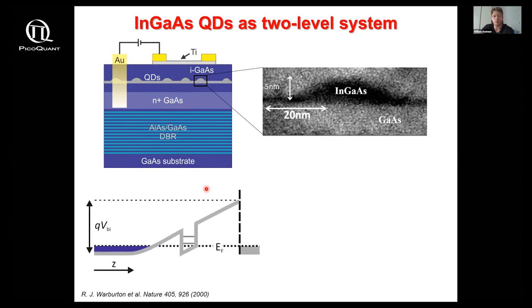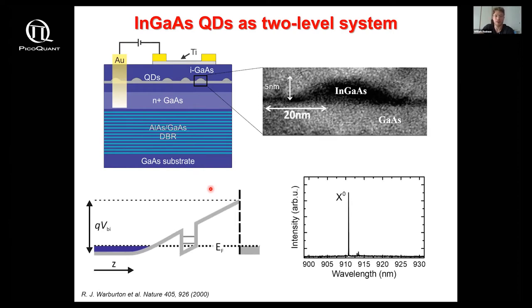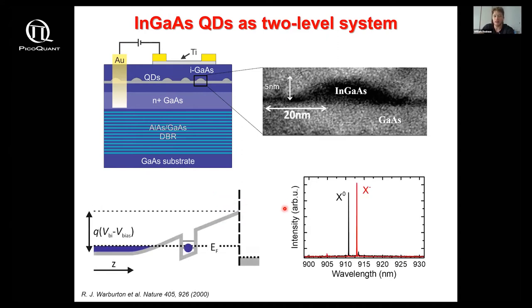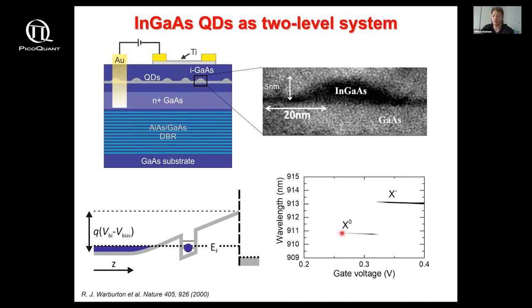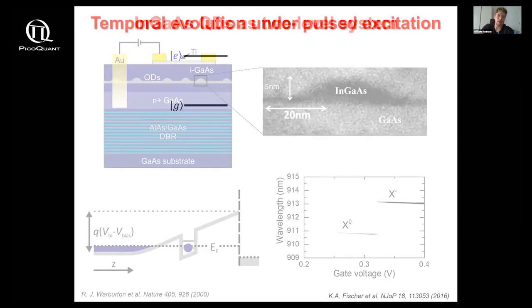Similar to what Matthias showed, we can control the electric environment such that we get these PLV measurements with nice charge stable plateaus with a sharp transition in between, for instance the neutral exciton and the negatively charged trion. What you can also see here is that there's a small tilt to these lines which is due to the quantum confined Stark effect, which allows us to fine-tune the emission energy such that it exactly matches our laser energy in resonance fluorescence experiments.